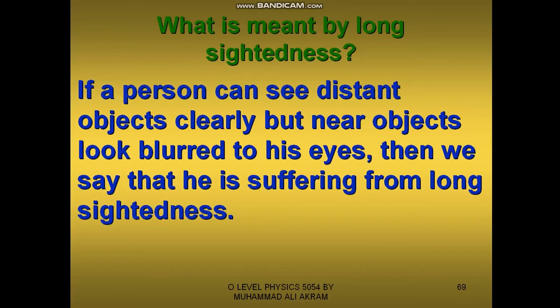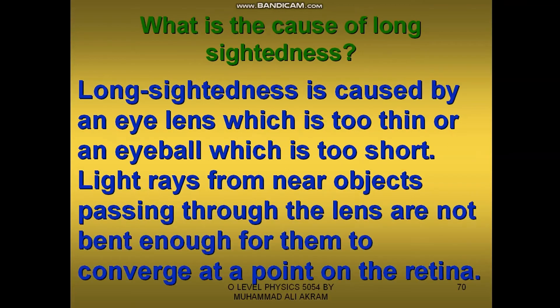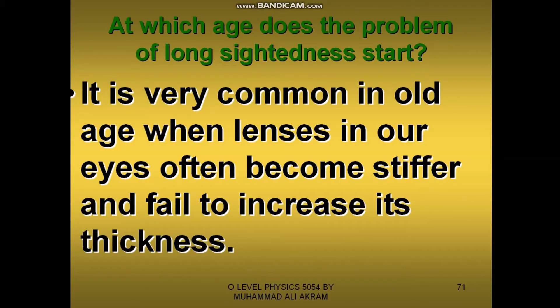Long sightedness: if a person can see distant objects clearly but near objects look blurred, then he is long sighted. It is caused by an eye lens which is too thin or an eyeball which is too short. It is very common in old age when the lenses in our eyes often become stiffer and fail to increase their thickness.